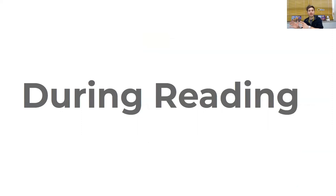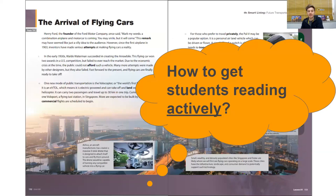So that was our pre-reading section. We had a discussion, we were introduced to key vocabulary, and we looked at interesting images of the flying cars. Now, during reading — we're actually on the passage about flying cars. How do we actually get students reading actively? This is one of the most difficult things: how do you get them to read properly?